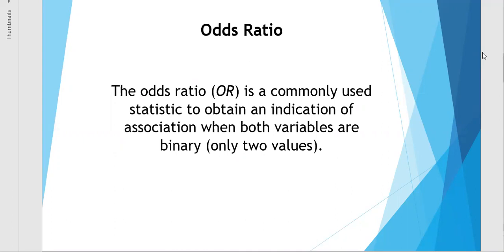An odds ratio is a commonly used statistic to obtain an indication of association. Both variables are typically binary, which means they only have two possibilities: yes and no, presence or absence, etc.